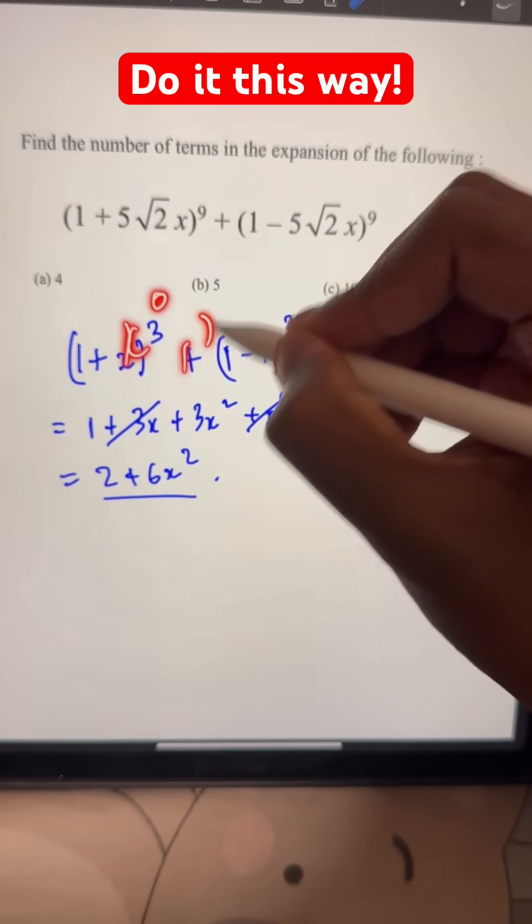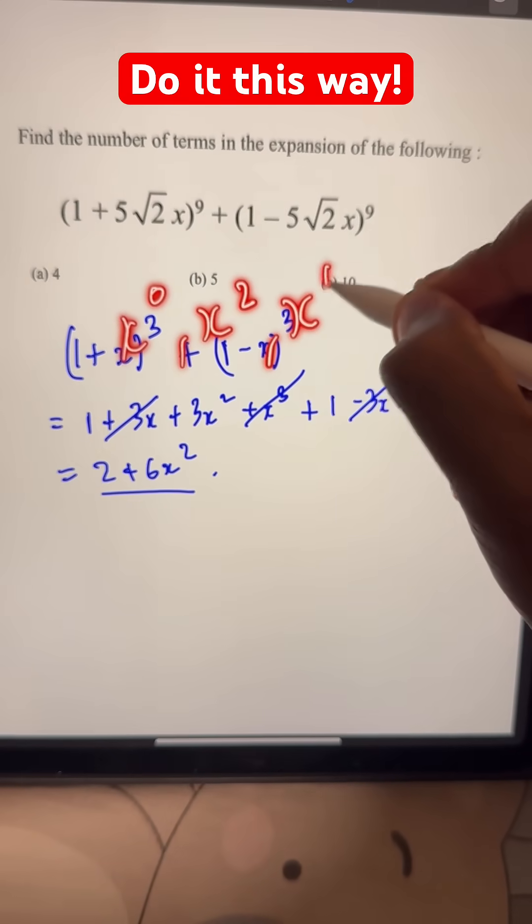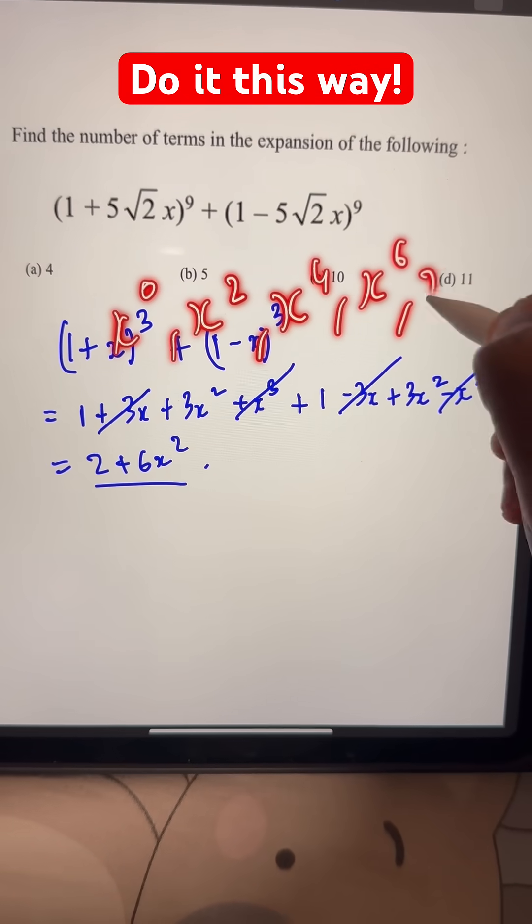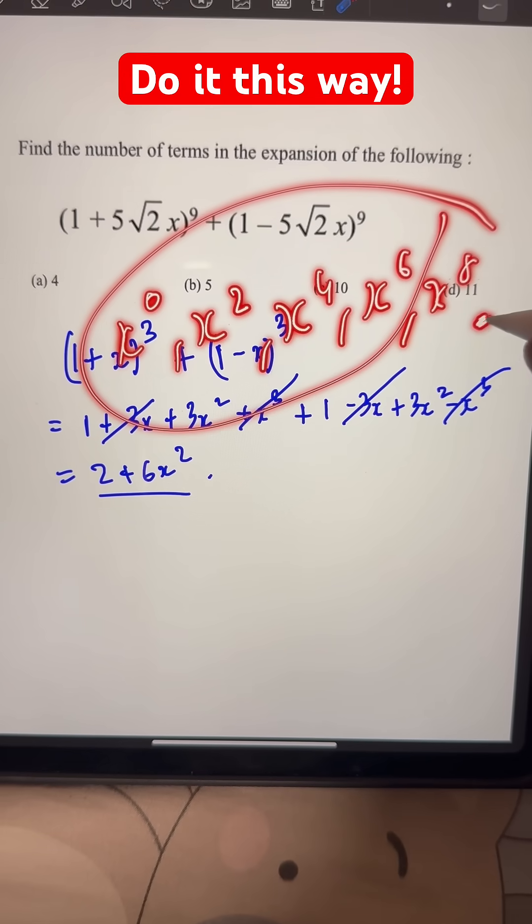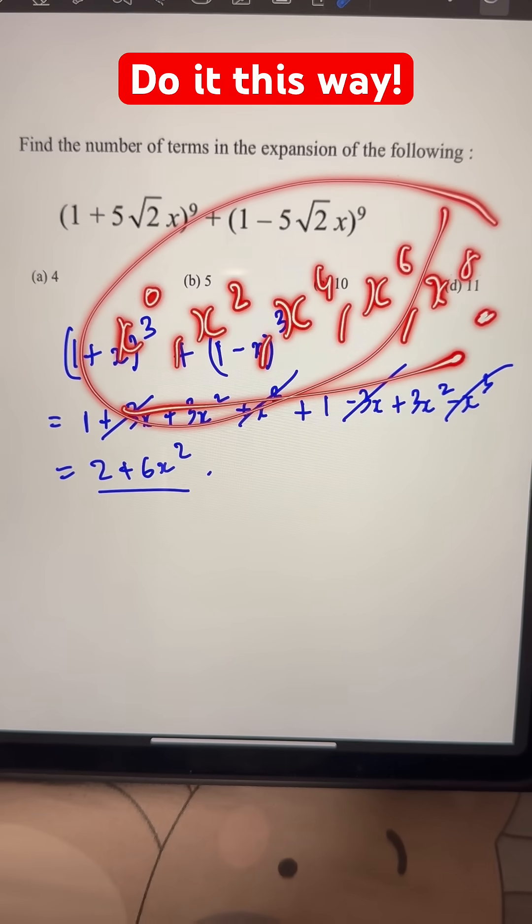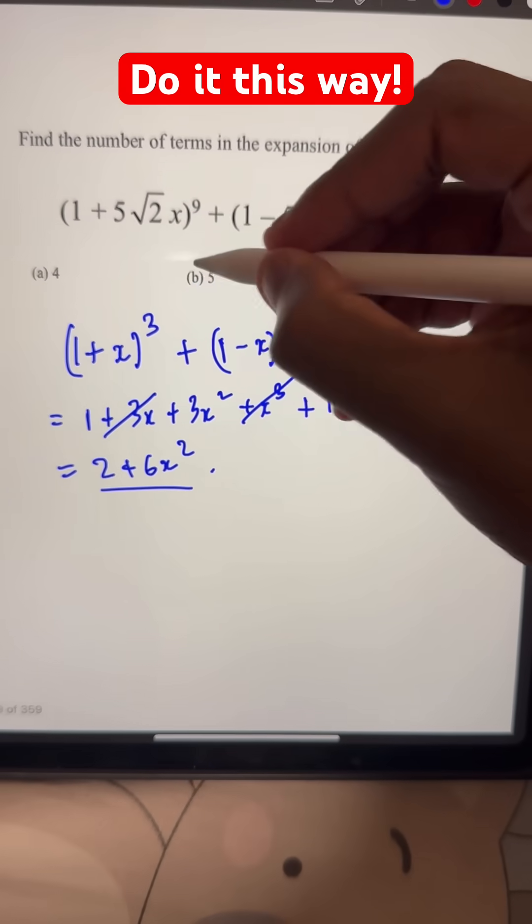So x⁰, x², x⁴, x⁶, and x⁸ - all of these will remain as terms. The odd ones get canceled out. So these are 1, 2, 3, 4, 5 terms. That's option B.